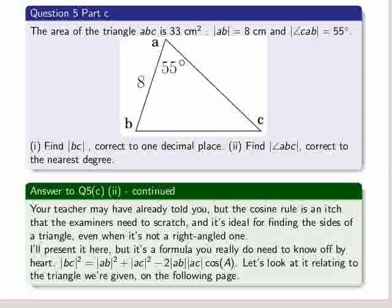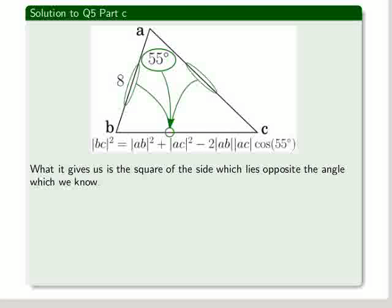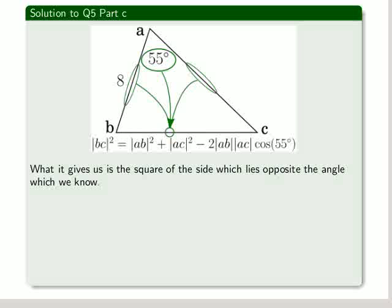So the cosine rule, what it means, you just have to follow those green arrows in the diagram. The two sides which make the angle 55 degrees are merged in that expression, which I've just mentioned. That's the way the formula is made up.